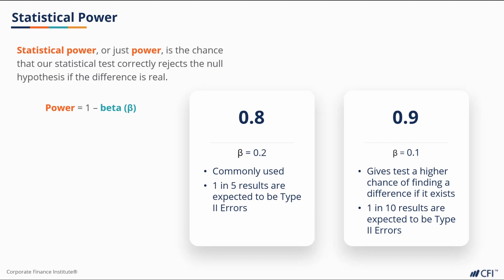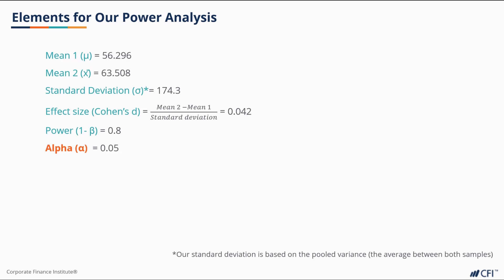We'll also set the power for our test. Statistical power, or just power, is the chance that our test correctly rejects the null hypothesis if the difference is real. It's directly correlated to how small our beta is. Power equals 1 minus beta. The higher the power, the lower the chance of type 2 errors. 0.8 is a power that is commonly used, so let's start with that, though I might be tempted to set it even higher at 0.9. Let's leave it at 0.8 for now, which is the same as saying we want a beta of about 0.2 or 20%. For our power analysis, we also need to determine our alpha. We'll continue with the alpha we used in the past of 0.05.